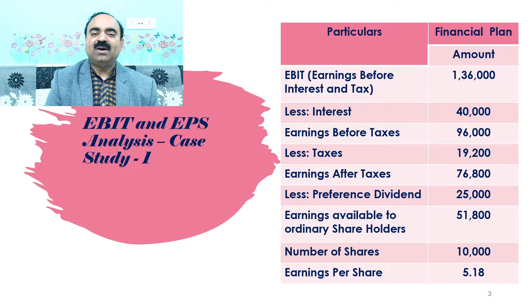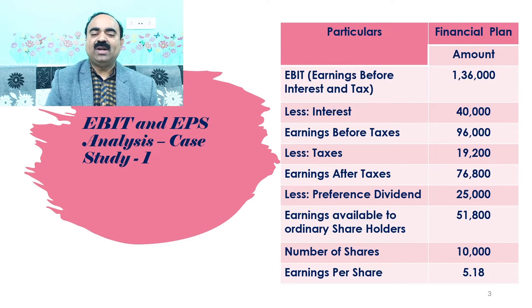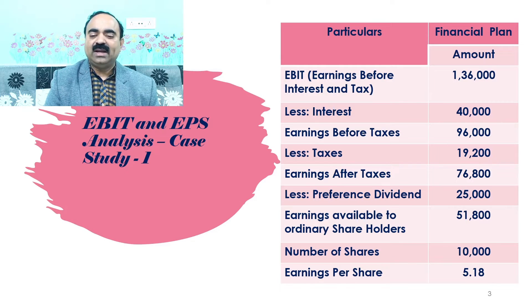After deducting ₹25,000 from earnings after taxes of ₹76,800, we got earnings available to ordinary shareholders of ₹51,800. The number of shares in the company was given as 10,000. Therefore, earnings per share equals earnings available to ordinary shareholders divided by number of shares: ₹51,800 divided by 10,000 gives earnings per share of ₹5.18.